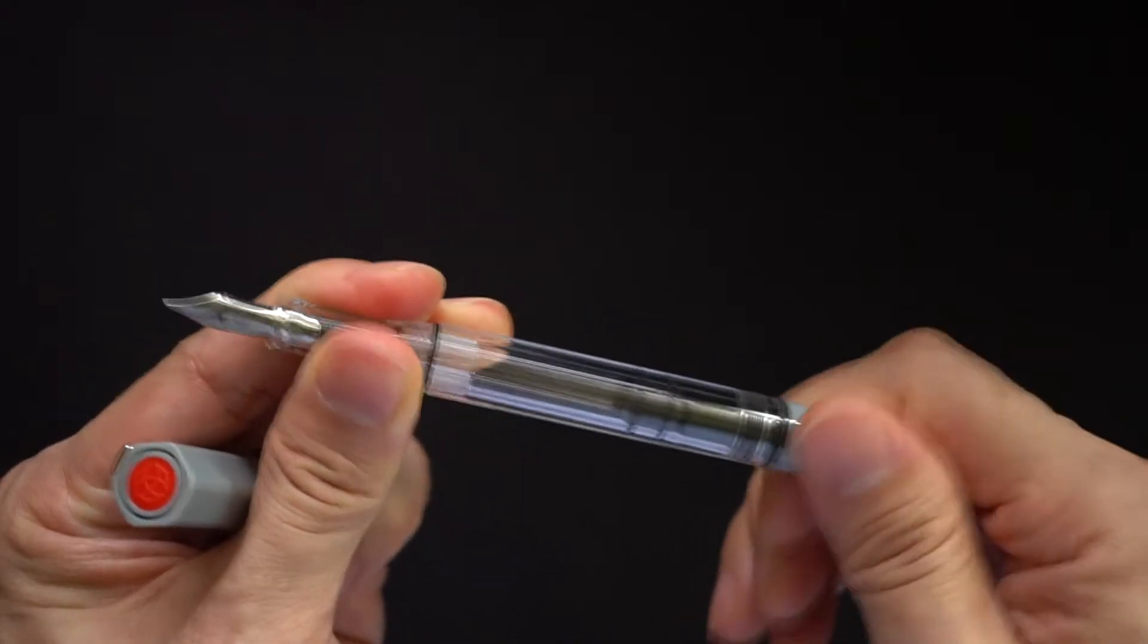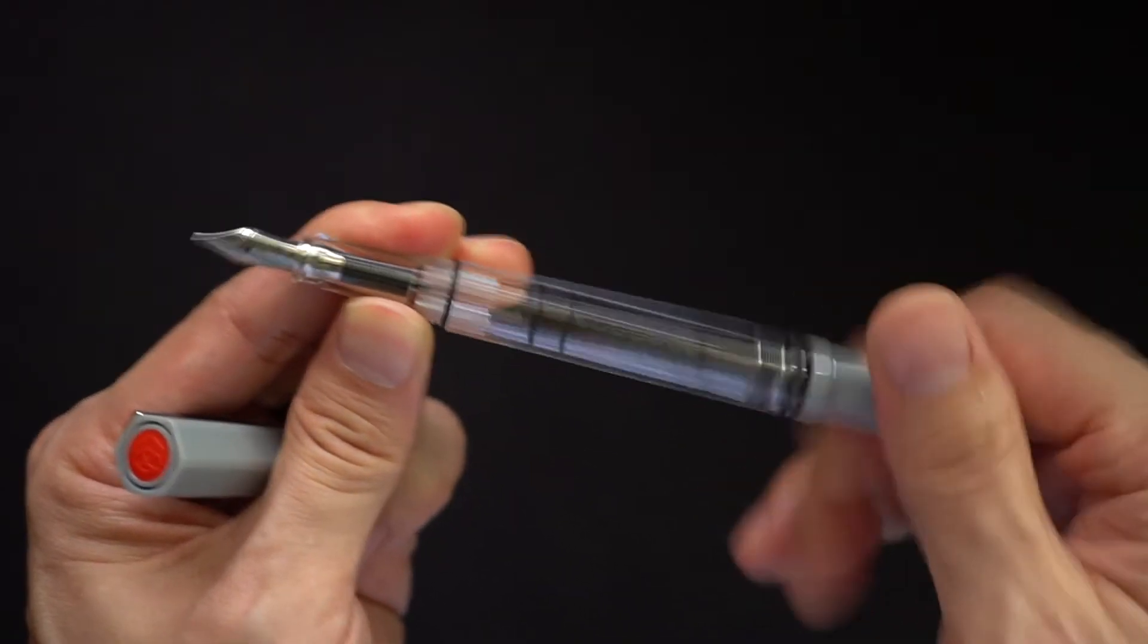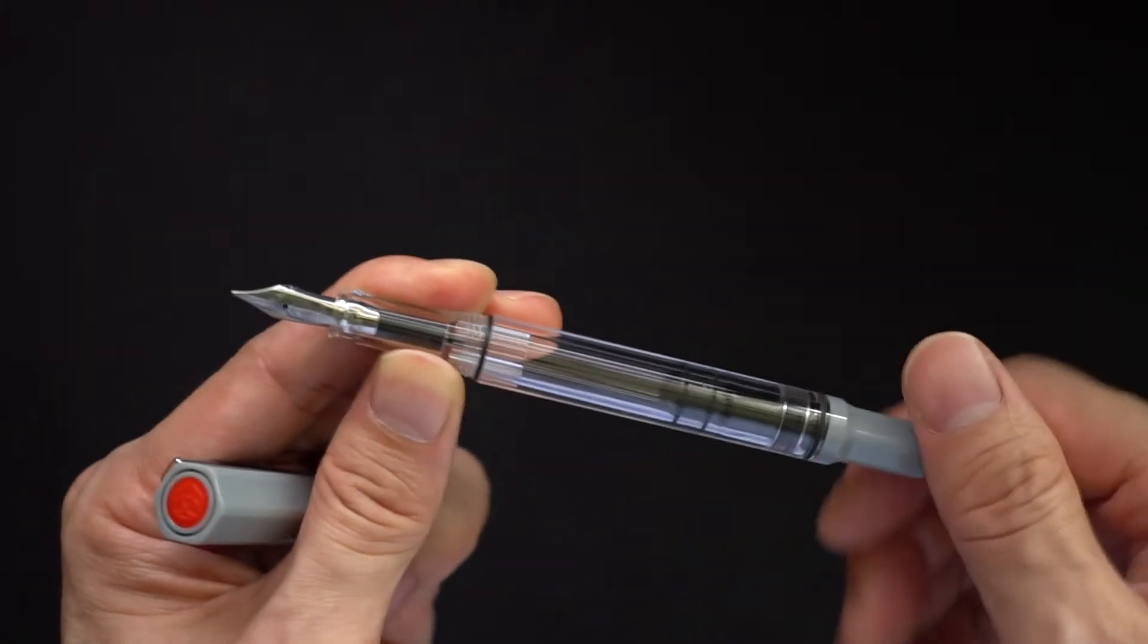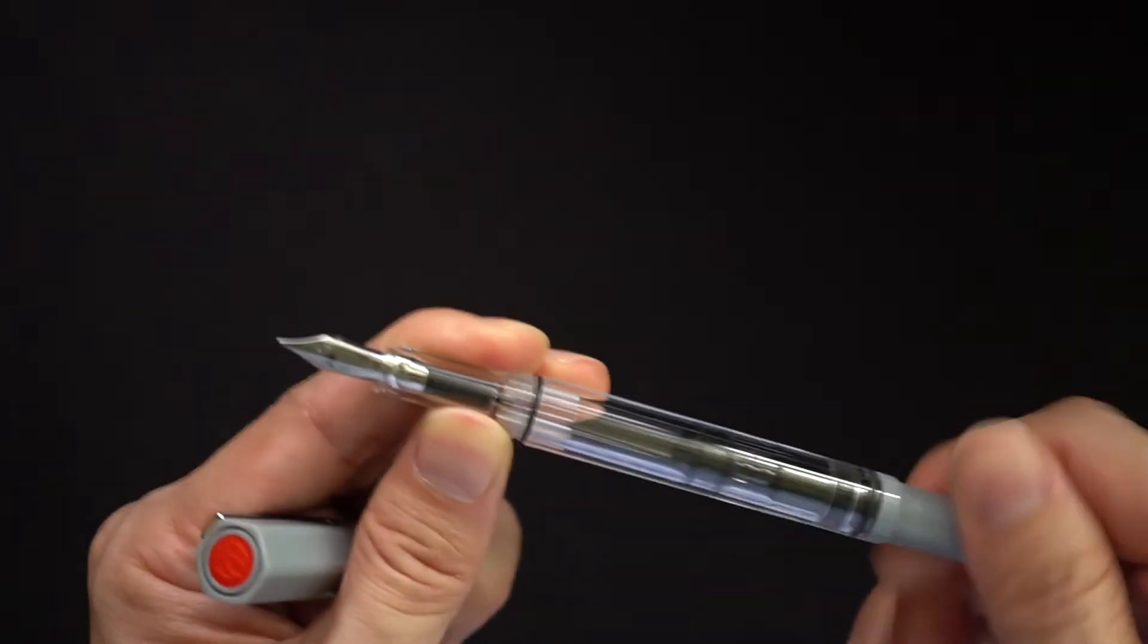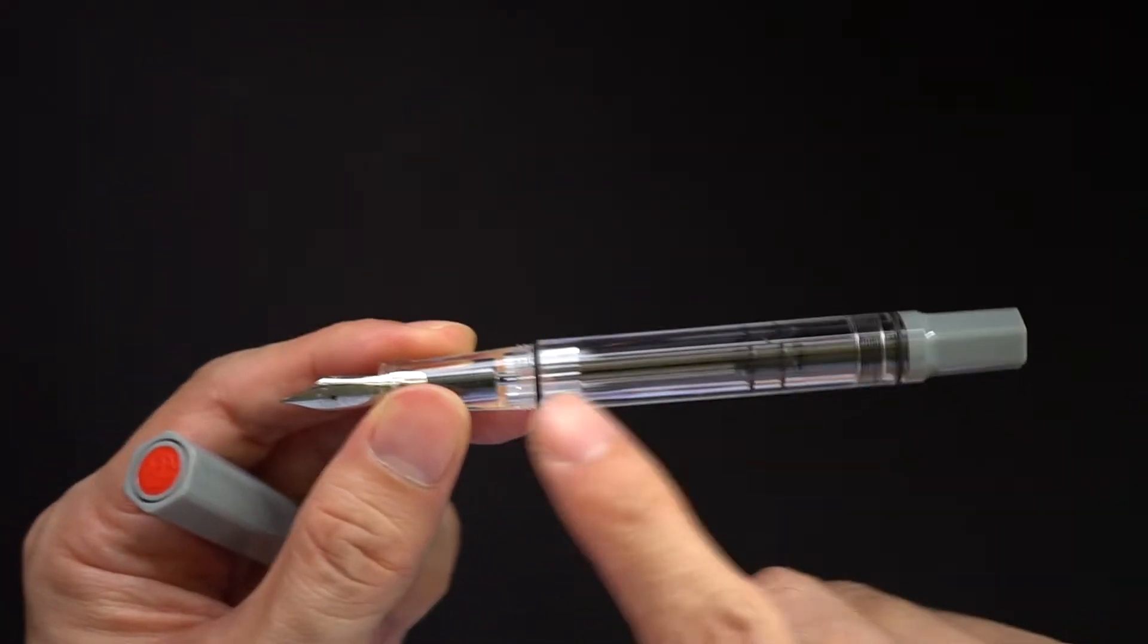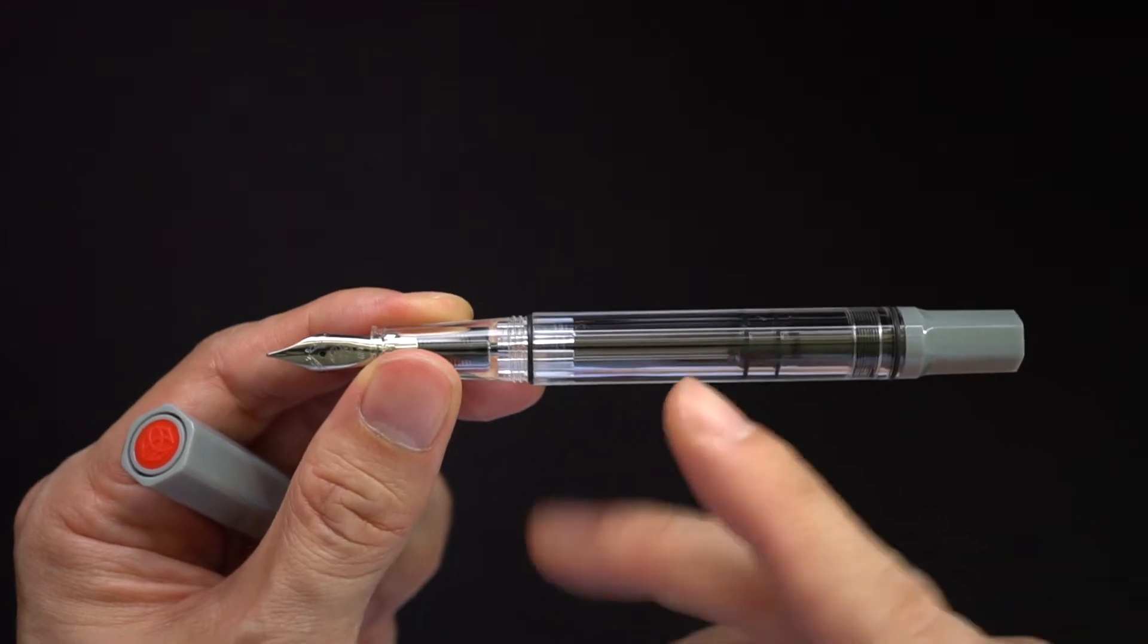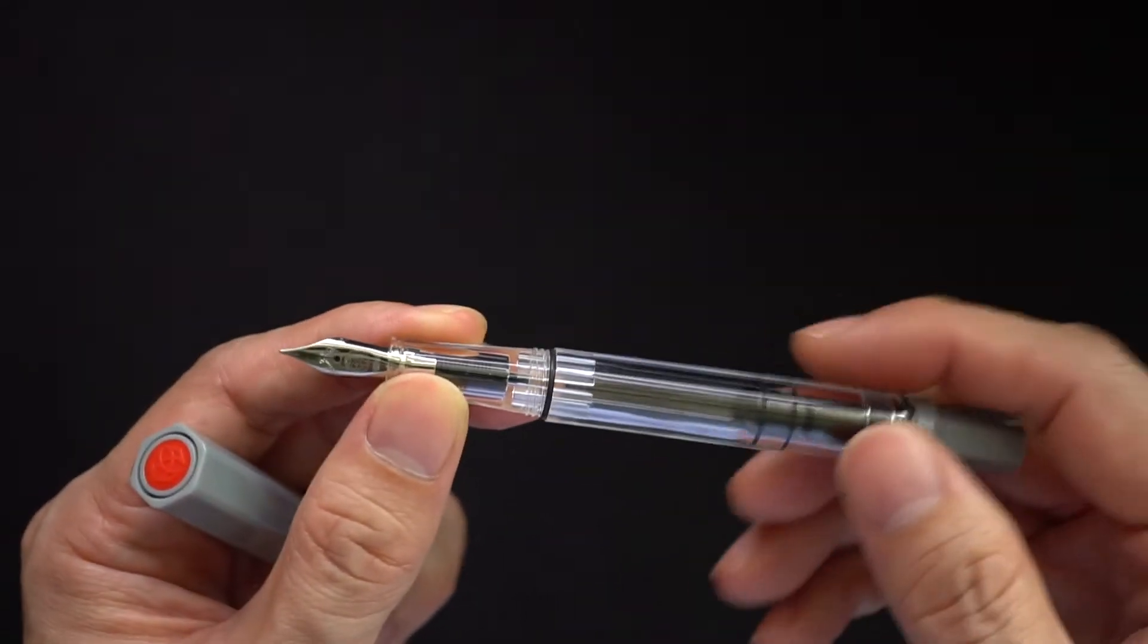It's a piston filler, so basically if you twist this little piston at the end, you'll actually move this seal up and down that will suck in ink from the nib when you insert it into a jar of ink. And as you can see, you can store quite a lot of ink in here. I'm not sure of the exact capacity, but you can easily put in I think maybe two milliliters of ink into this area down here.